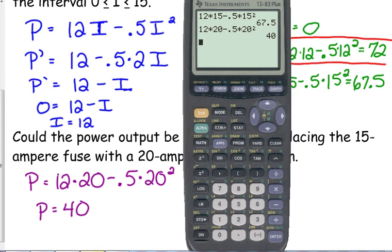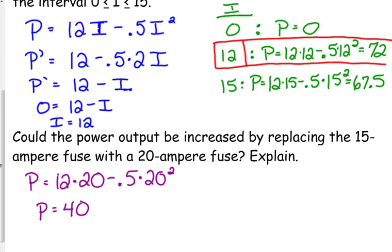So no, it does not increase our power output. And it should make sense because if we look at our power function, the power function is a quadratic with a negative coefficient on the I squared term. So that means it's a downward facing parabola. So if our maximum is right here, then anything above that—any I value above that—is going to have a lower power output. So no, it does not increase your power output by doing that.